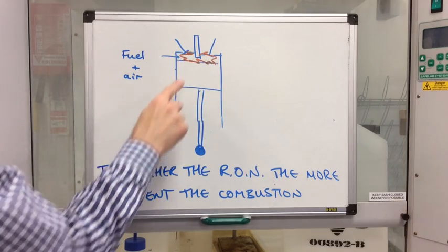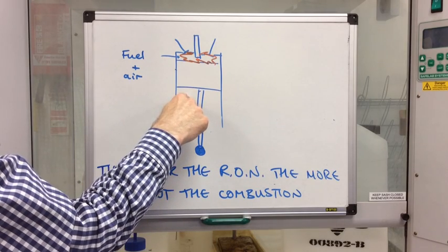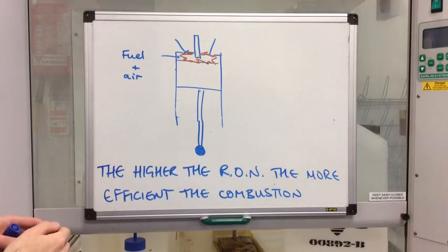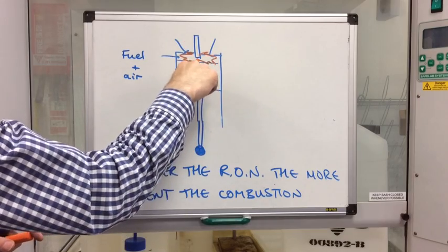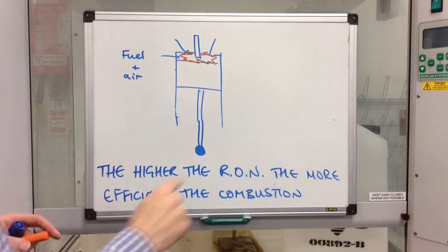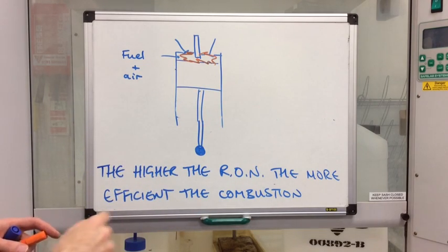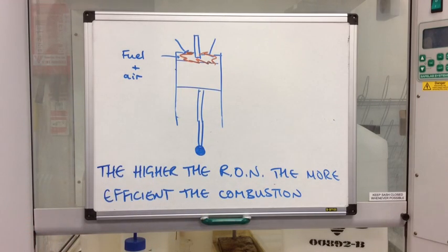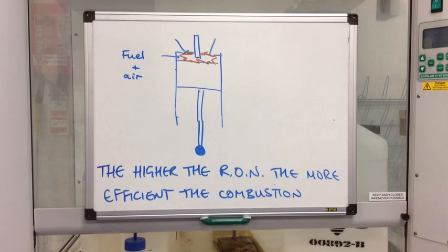Now the problem with fuels that have low RON values is they aren't very good at withstanding this compression. So instead of combusting right up here, they'll combust when the piston's down there. So effectively, the engine won't be as efficient because as soon as that fuel combusts, the piston wants to move, is going to be forced back down again. So you're not getting the maximum energy from the cycle of the engine. So I hope that made sense, but that explains the link between the RON value and this combustion under compression.